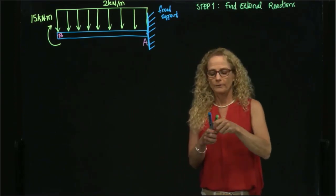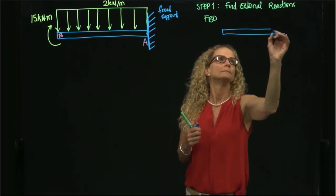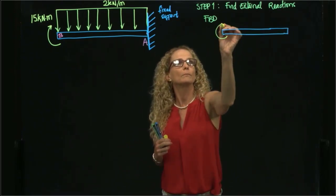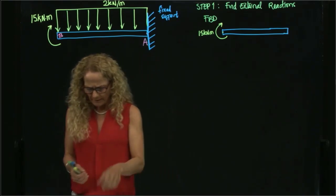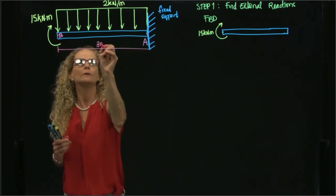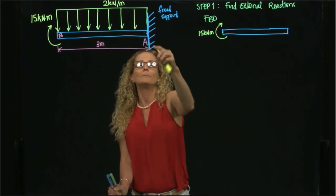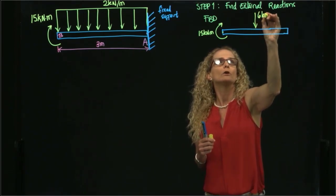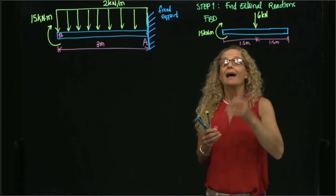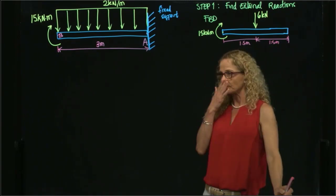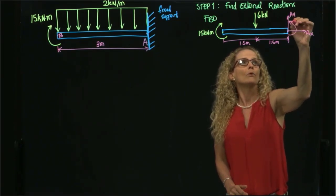I will draw the free body diagram of the beam, and I have my concentrated moment right here of 15 kilonewtons per meter. This is 3 meters. Therefore, I have a concentrated load of 2 kilonewtons per meter times 3 meters, which gives me a concentrated load of 6 kilonewtons, created at 1.5 meters from each end. And then I have my external forces produced by this support: AX, AY, and a moment at A.